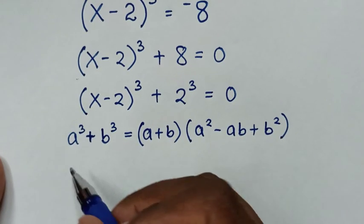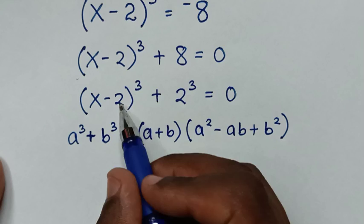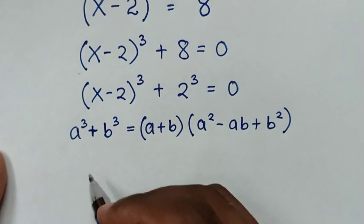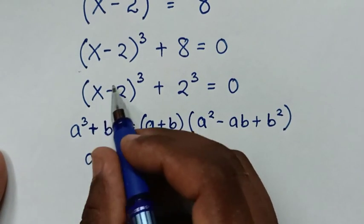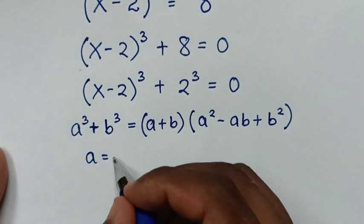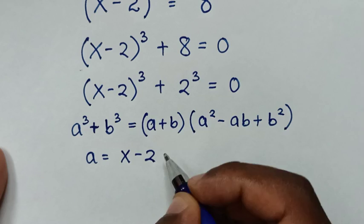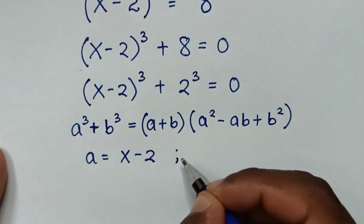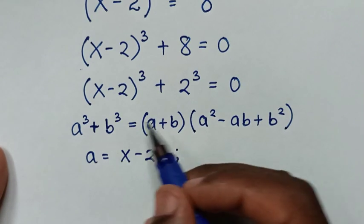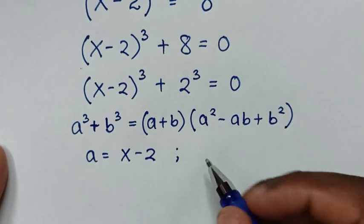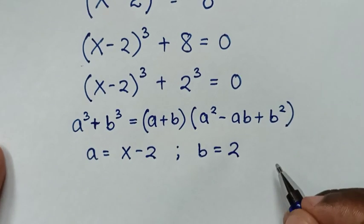When we compare a³ with (x - 2)³, then a is equal to x - 2. And when we compare b³ with 2³, then b is equal to 2.